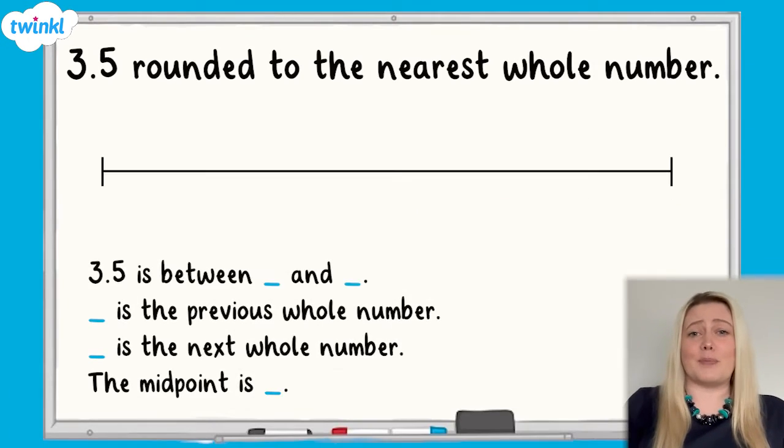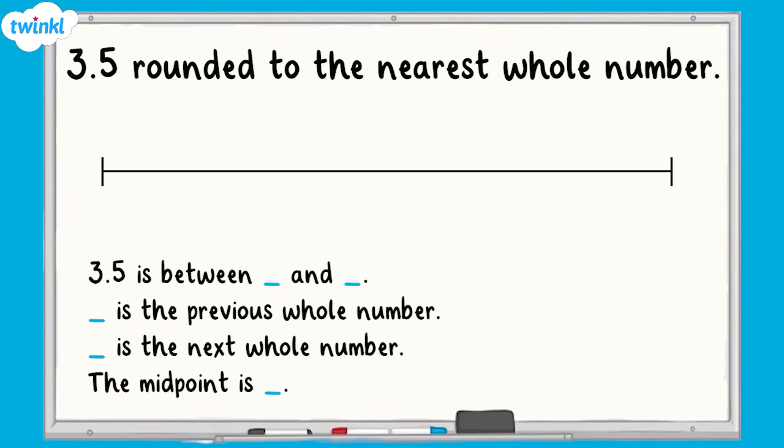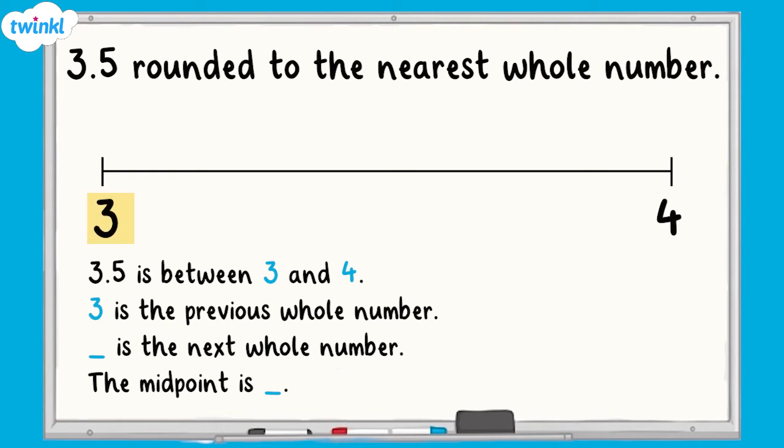But what happens if the number is exactly in the middle of the number line? Let's try rounding 3.5 to the nearest whole number. 3.5 is between 3 and 4. 3 is the previous whole number. 4 is the next whole number. The midpoint is 3.5.